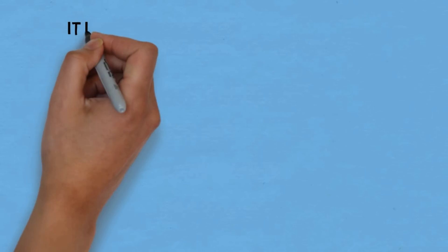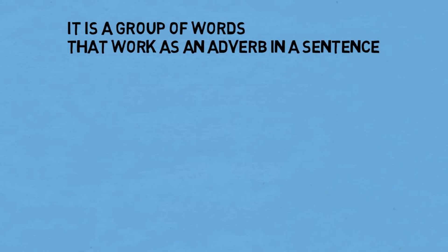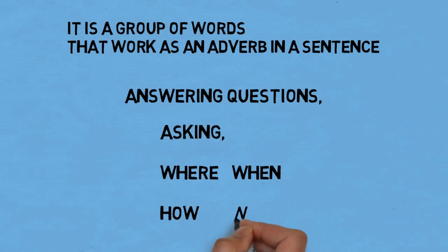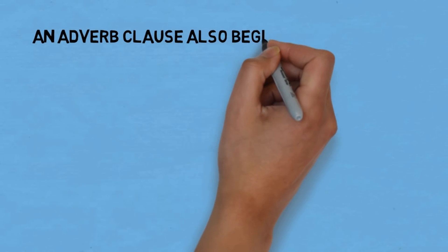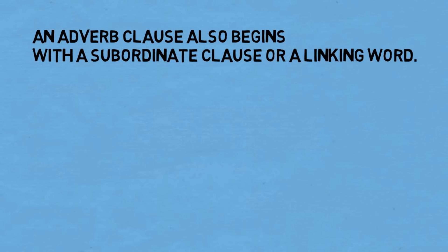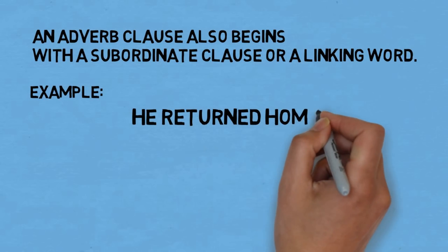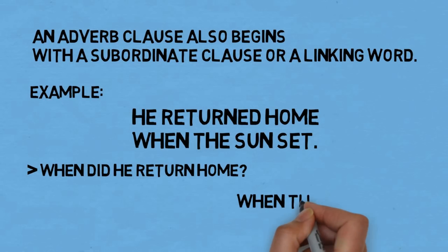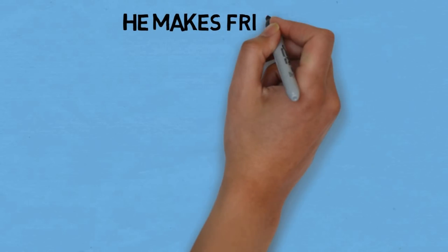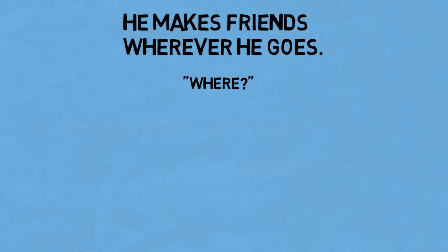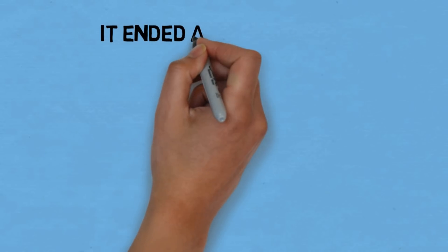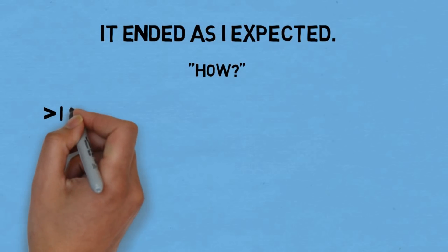An adverb clause is a group of words that works as an adverb in a sentence, answering questions of where, when, how, and why. An adverb clause also begins with a subordinating conjunction or linking word. For example, 'He returned home when the sun set' — asking 'when did he return home?' gives 'when the sun set', so 'when the sun set' is an adverb clause. Another example: 'He makes friends wherever he goes' — asking 'where does he make friends?' gives 'wherever he goes', which is an adverb clause.